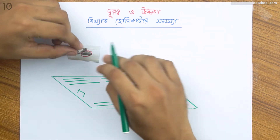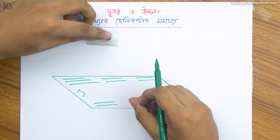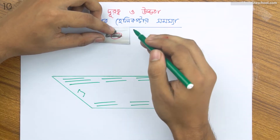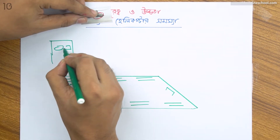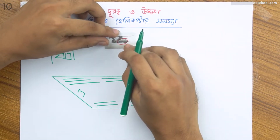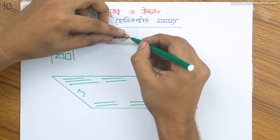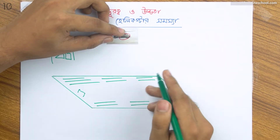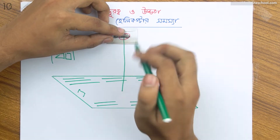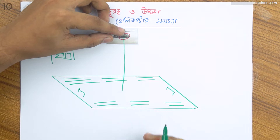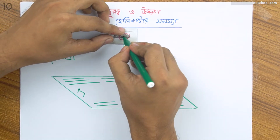আমি যখন ইস্কুলে পড়তাম, আমার ইস্কুল তা ছিল না। এটা মাঠের কাছে ছিল। সেই মাঠের সমতল কোনো জায়গায় কাজে থাকবেন। হেলিকপ্টারটা কত উঁচুতে - আজ দেখো কীভাবে বোঝা যায়। এই হেলিকপ্টারের যে জায়গাটা, ভূমি সমান্তরাল রেখা।